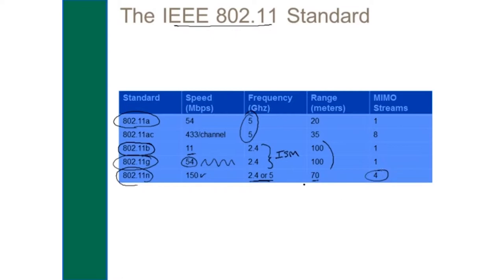One of the latest standards is 802.11ac. Using multiple channels gives you higher speed — it's now capable of one gigabit per second over wireless, which is amazing. That's because it has even more streams, and improvements have also been made in how data is encoded.